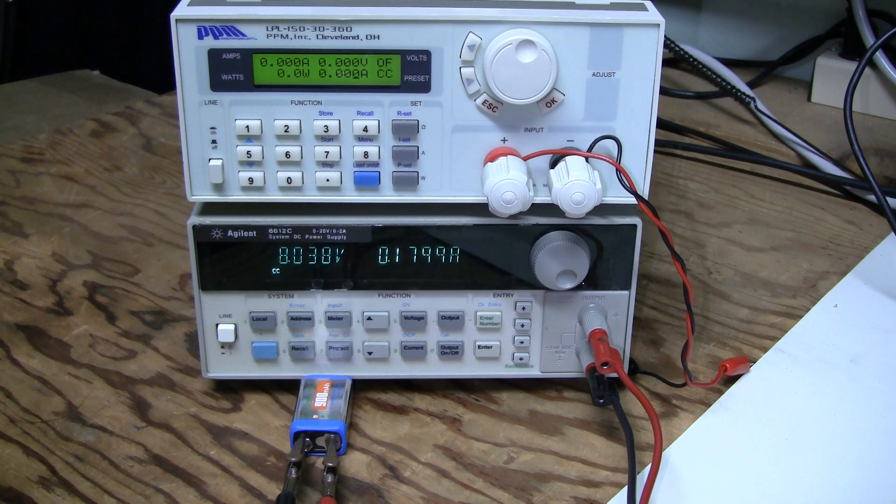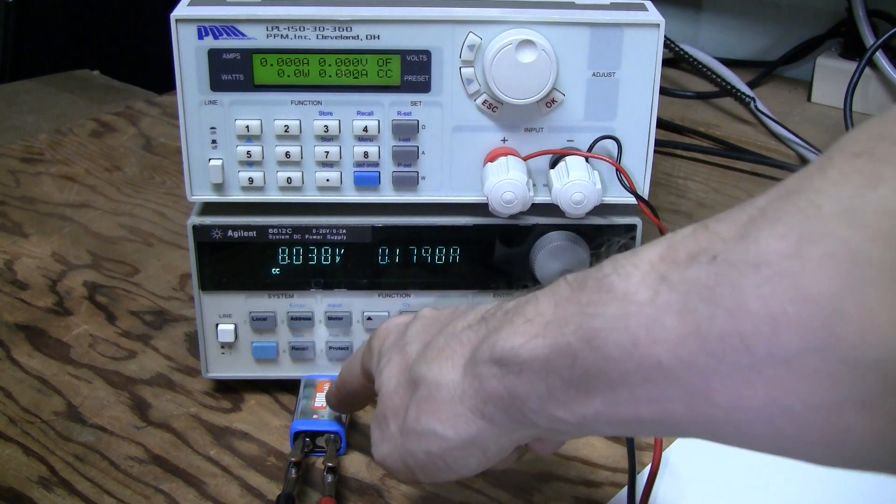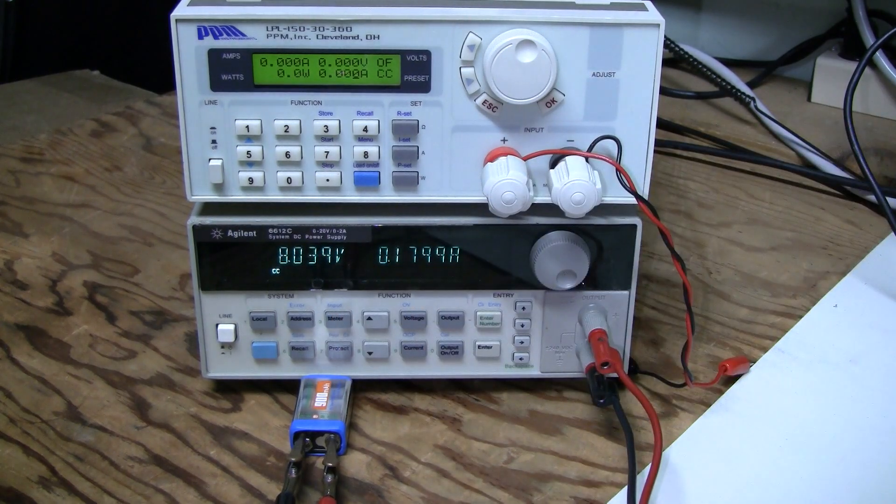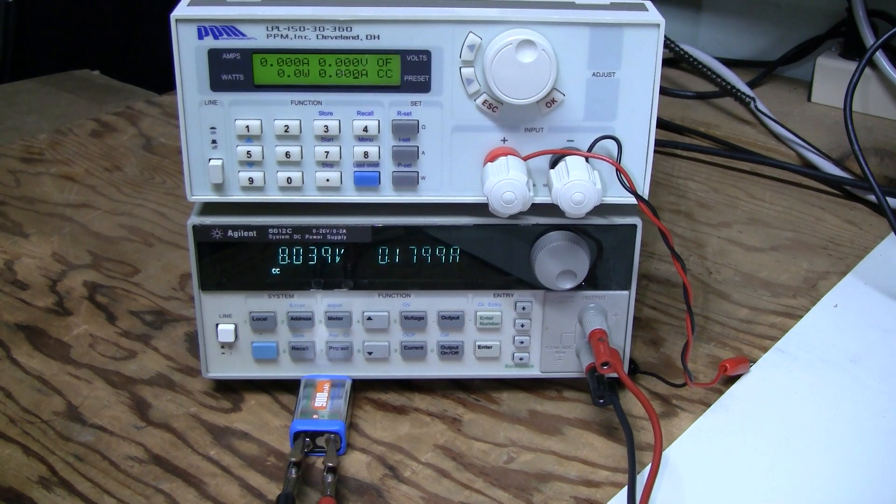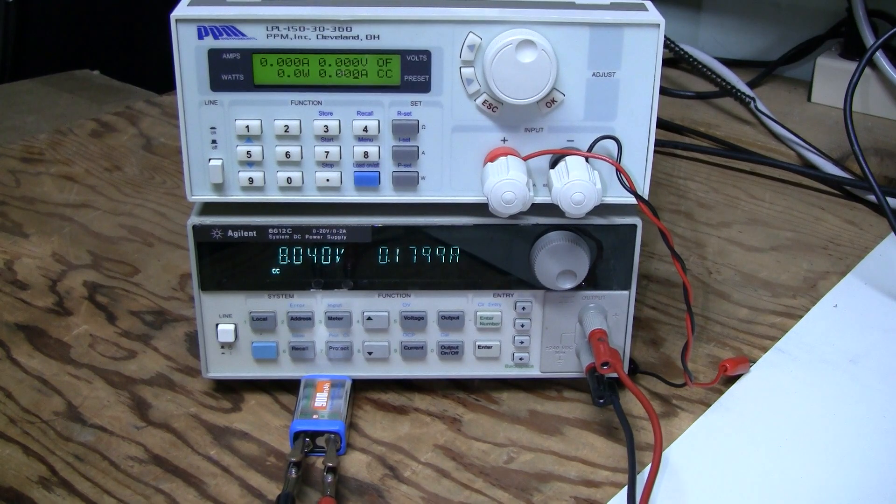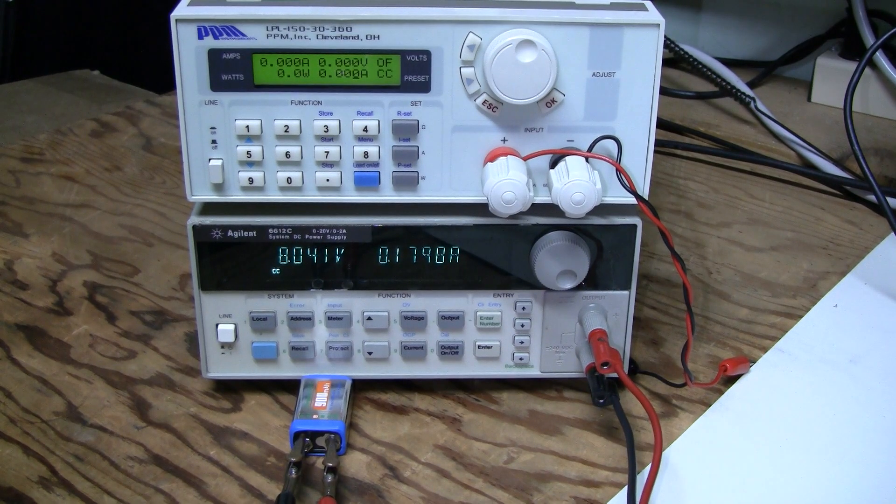And I am going to charge and discharge them at 0.2C, which in this case of 900 mAh battery means 180 mAh. And as you can see it is charging now at 180 mAh. So I will collect the data on my computer and we will discuss the results.